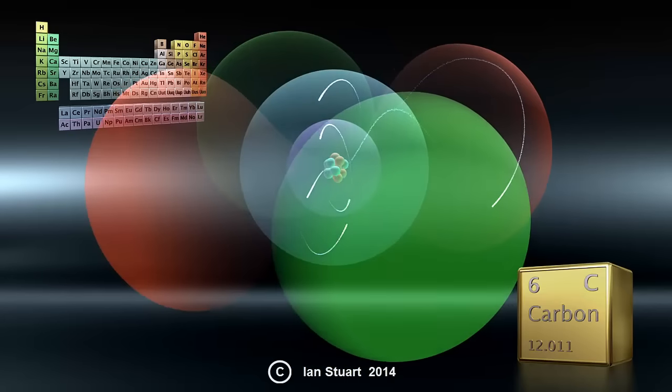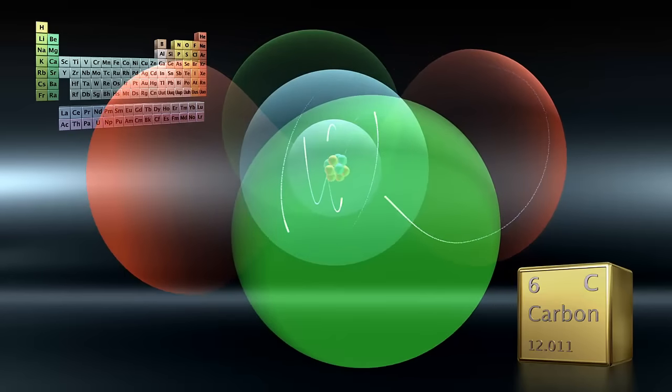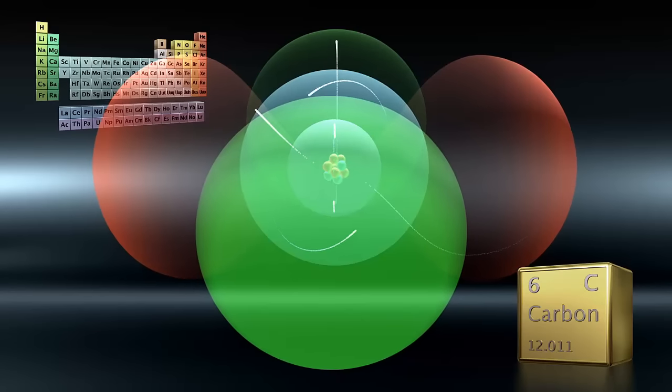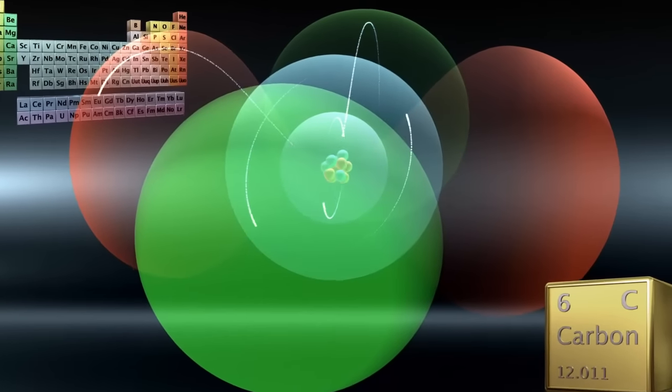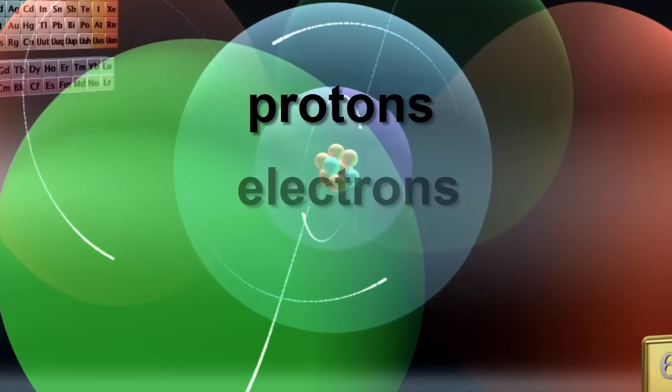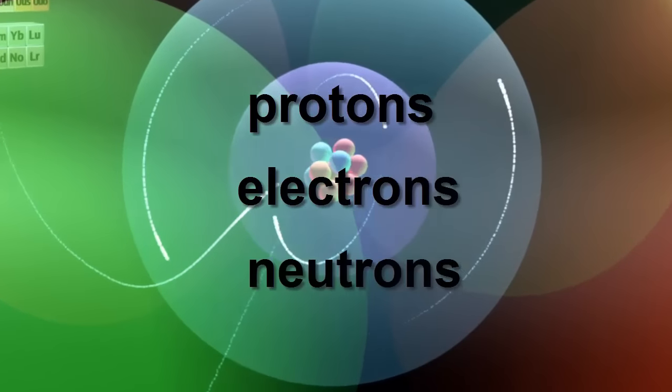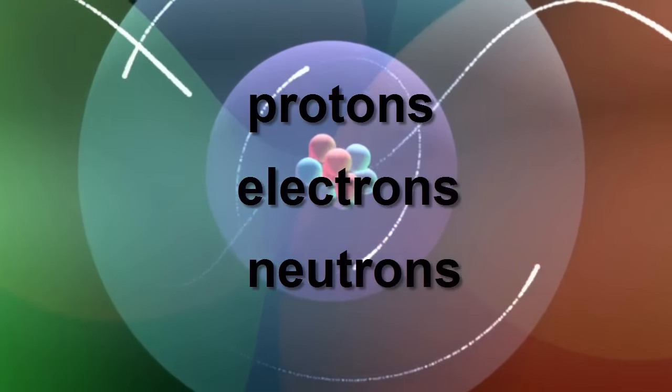In the previous video we discovered that all the atoms in the periodic table are made from just three kinds of particles: protons, electrons, and neutrons. The whole world, in fact. Amazing!